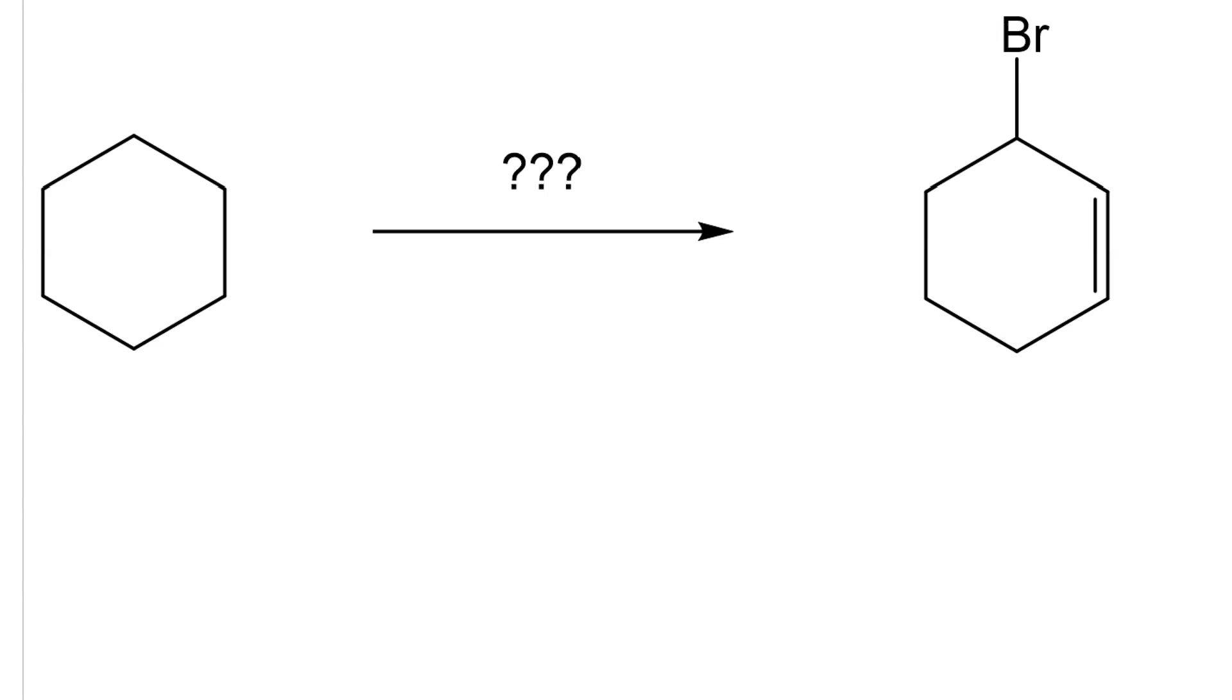Let's do retrosynthetic analysis. If we look at the product, we see that it has a bromine in the allylic position. That means we could get it from allylic bromination.